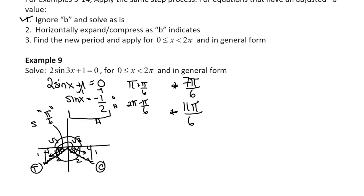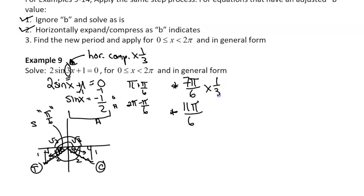But the actual question asks when sine 3x equals negative 1 half. So we have to look at this 3, which tells us there is a horizontal compression by a factor of 1 third. So 7π over 6 and 11π over 6 aren't actual solutions anymore. To find our first true solutions between 0 and 2π, we multiply each by 1 third, giving us 7π over 18 and 11π over 18.